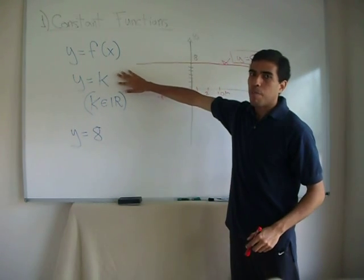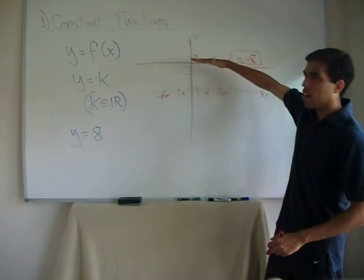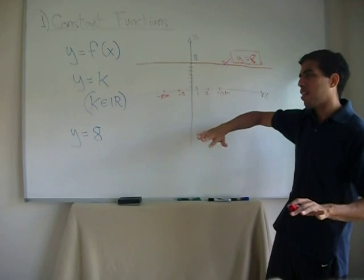It's a horizontal line, and in general, every function that has the appearance of y equals k, and k is a real number, is going to be a horizontal line, just as flat as that.